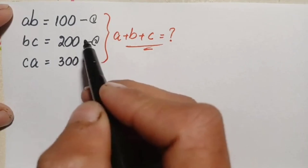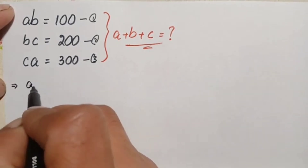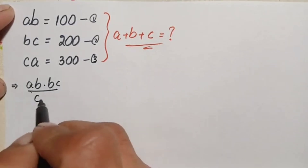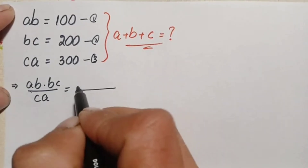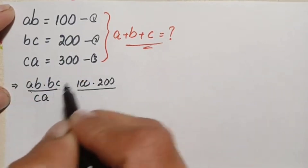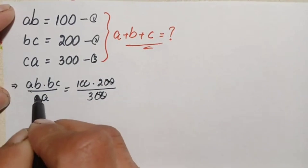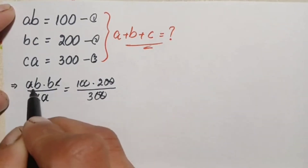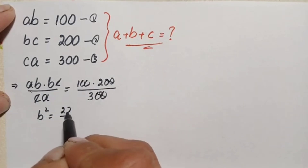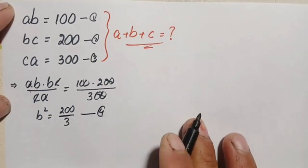In the first step, we multiply equation one and equation two, and divide the result by equation three. So a·b times b·c divided by c·a equals 100 times 200 divided by 300. We cancel the two zeros and cancel c with c and a with a, leaving b squared equal to 200 divided by 3. Let this be equation number four.